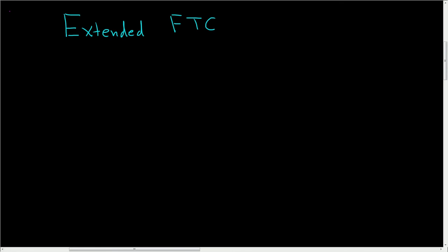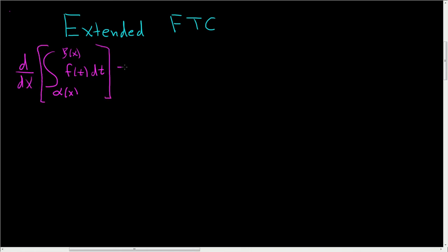Let's talk about the extended fundamental theorem of calculus — I'm not sure if it's called that, but that's what we'll call it. If you have the definite integral from alpha of x to beta of x of f of t with respect to t, and you take the derivative with respect to x, this equals f of beta of x times beta prime of x minus f of alpha of x times alpha prime of x.